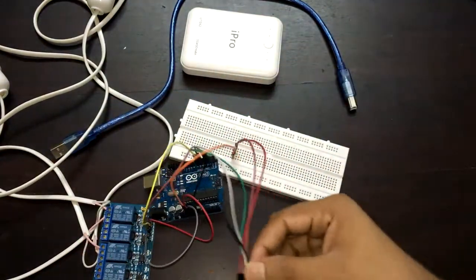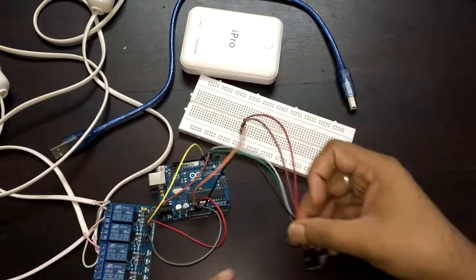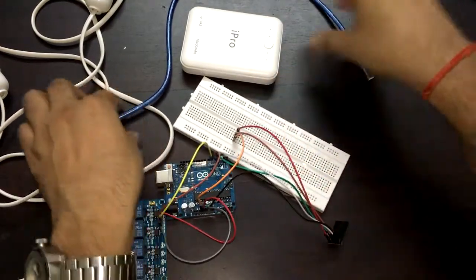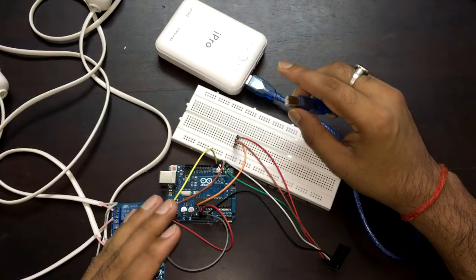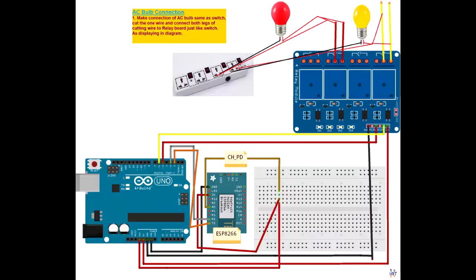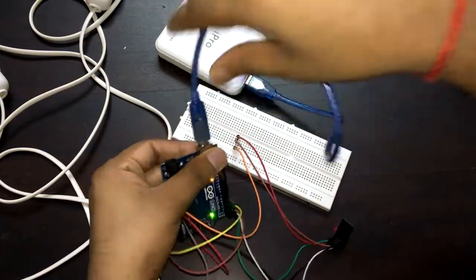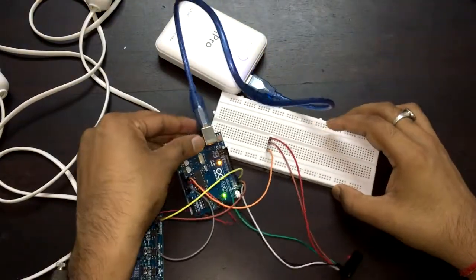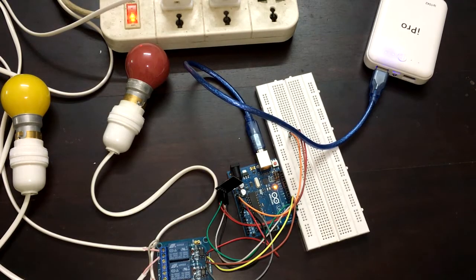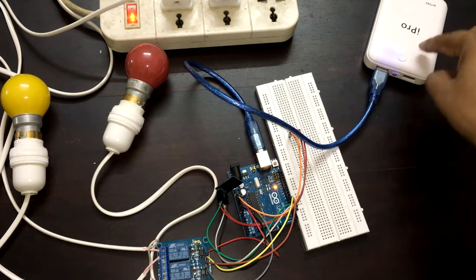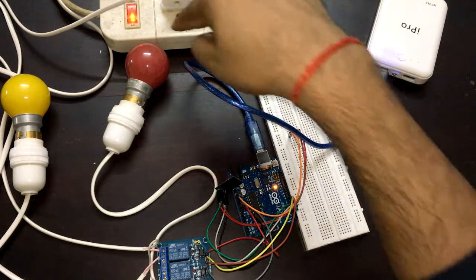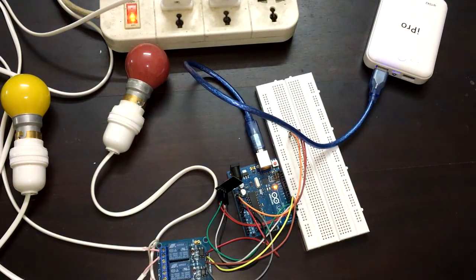Now all connections are ready. You can also see the circuit diagram here and it will be available on our website as well. Now I'm going to power on the Arduino. Everything is ready — I've powered the Arduino and the bulbs.